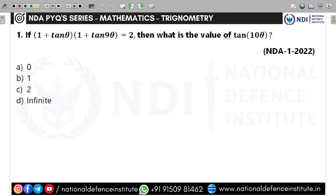The first question says: if (1 + tan θ)(1 + tan 9θ) = 2, what is the value of tan θ? It's a simple question — we just have to be cautious about opening the identity. Let's see what it is.